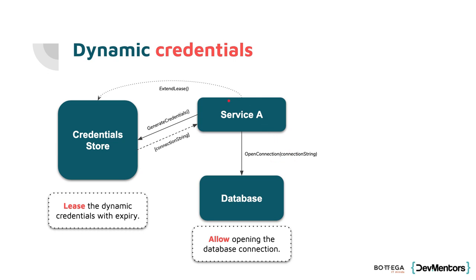So instead of just directly calling our database with the connection string coming from the app settings file or some environment variable, what we want to do is first call this credential store to give us this connection string. Then we can use this dynamically generated connection string to talk to the database. And if it turns out that this connection string expires, we can always ask the credential store to make it valid for one more hour, or remove this connection string entirely if we no longer want it to be accessible.